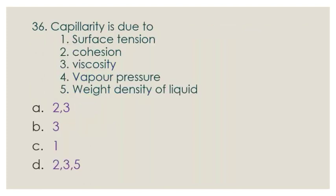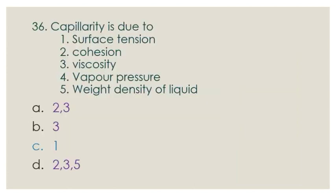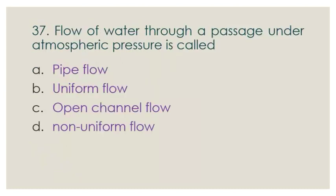Question number 36: Capillarity is due to — 1) surface tension, 2) cohesion, 3) viscosity, 4) vapor pressure, 5) wave density of the soil. Capillarity is defined as the tendency of a liquid in a capillary tube to rise or fall as a result of surface tension. So capillarity is due to surface tension, and option C is the correct answer.